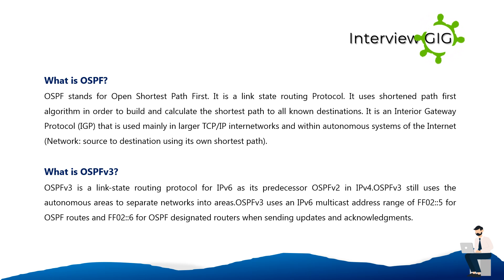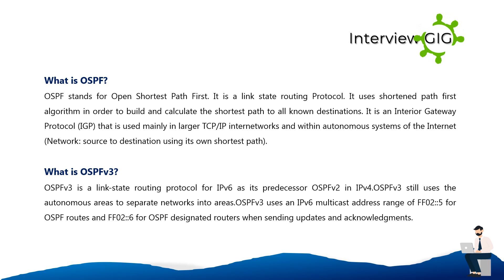OSPFv3 is a link state routing protocol for IPv6, as its predecessor OSPFv2 is for IPv4. OSPFv3 still uses autonomous areas to separate networks into areas. OSPFv3 uses an IPv6 multicast address range of FF02::5 for OSPF routers and FF02::6 for OSPF designated routers when sending updates and acknowledgments.